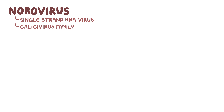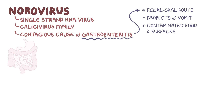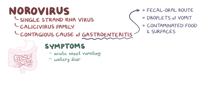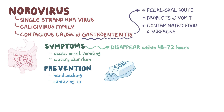As a quick recap: norovirus is a single-strand RNA virus from the Caliciviridae family. It is a very contagious cause of viral gastroenteritis that is transmitted via the fecal-oral route, droplets of vomit, and contaminated foods and surfaces. It mainly affects the small intestine and causes symptoms like acute onset vomiting and watery diarrhea. It's usually self-limiting, with symptoms disappearing within 48–72 hours. Since there's no vaccine, the best prevention is proper handwashing, sanitizing surfaces, and having effective water and sanitation facilities.